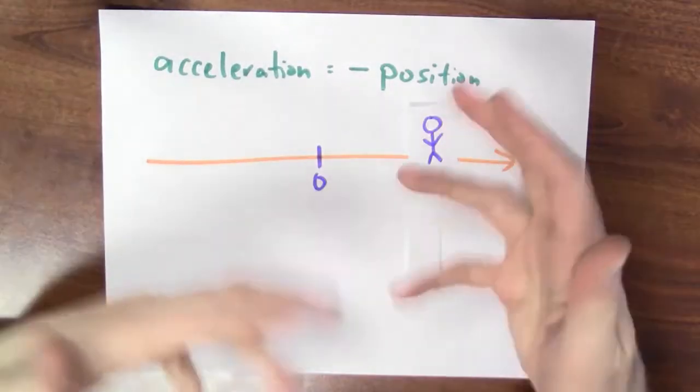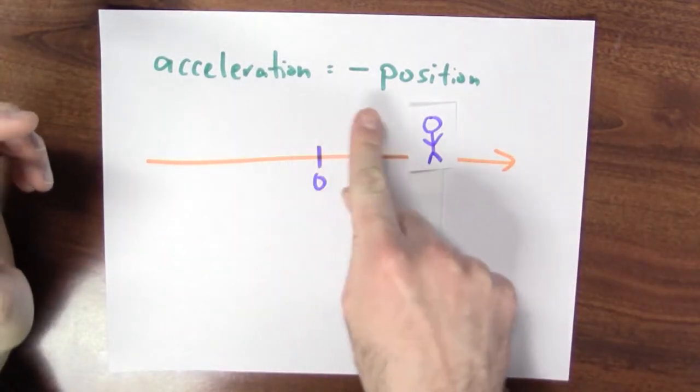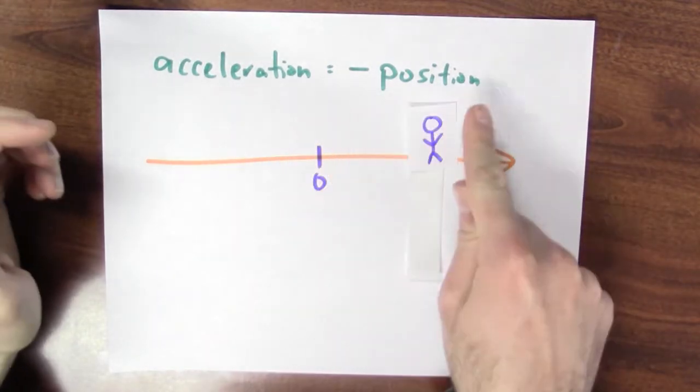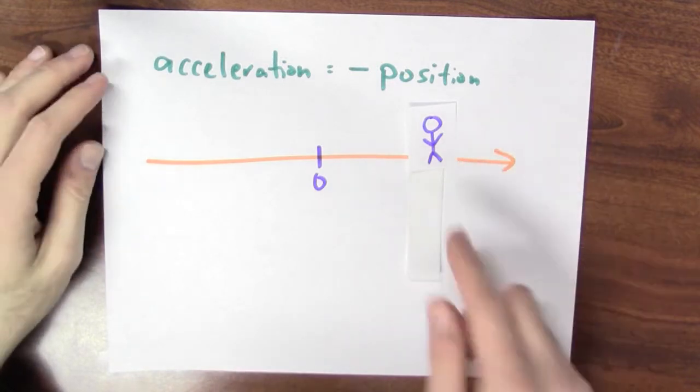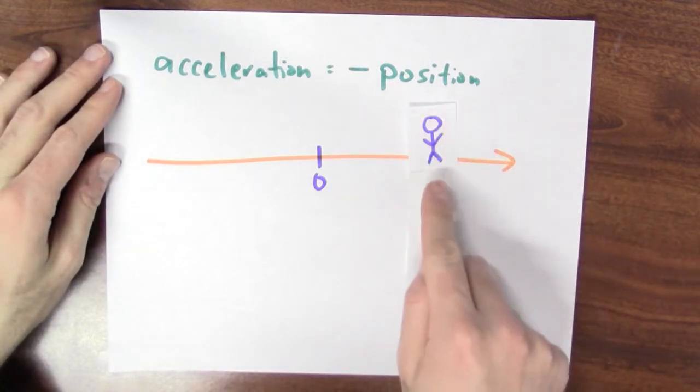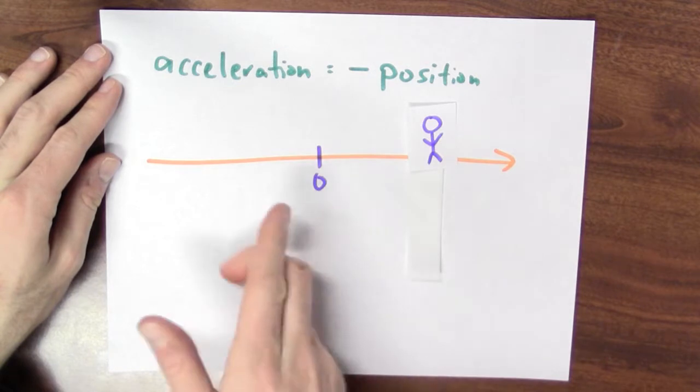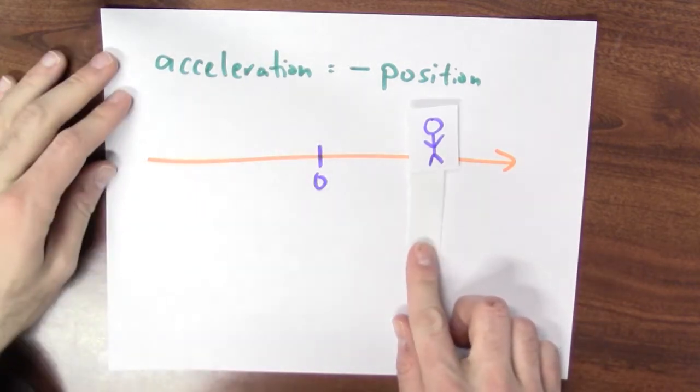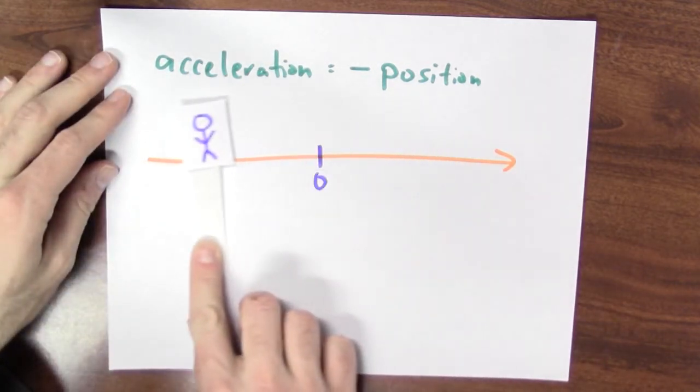Let's try to cook up a different situation. Instead, suppose that we're in a situation where my acceleration is negative my position. So that means that if I'm standing over here where my position is positive, I'm to the right of 0, then my acceleration is negative and I'm being pulled back towards 0.